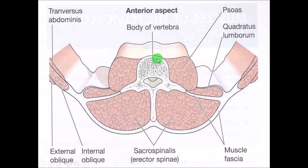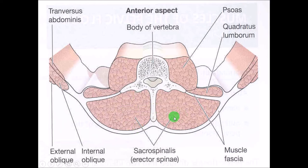Here is a cross-sectional view at the trunk level. You can see the body of the vertebra and the transverse process. The psoas major muscle is visible on either side of the vertebral body. Behind it is the quadratus lumborum, and further posteriorly is the erector spinae (sacrospinalis) muscle, which helps in erection of the spine.